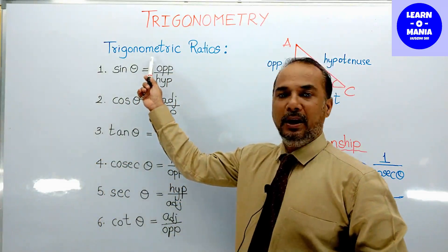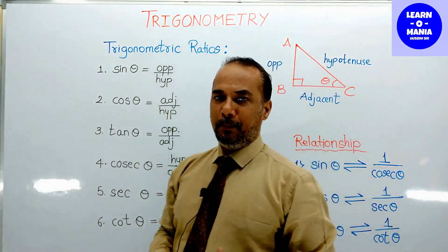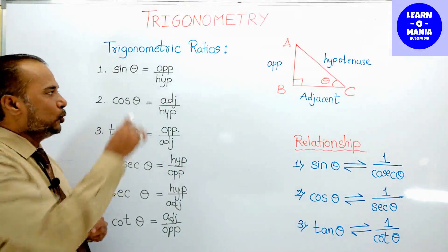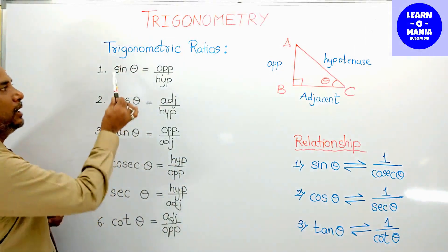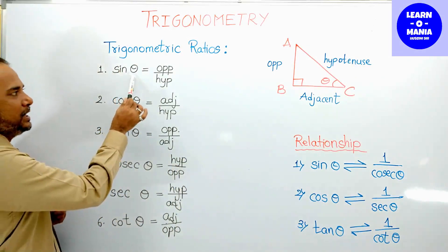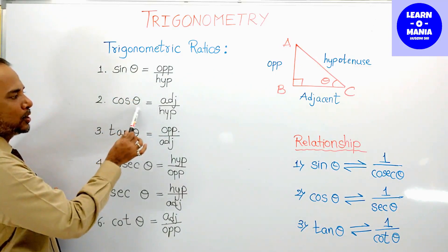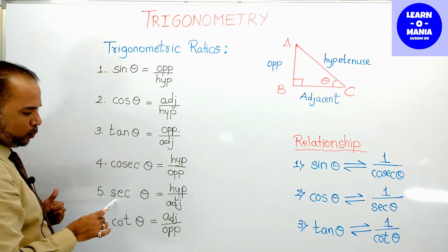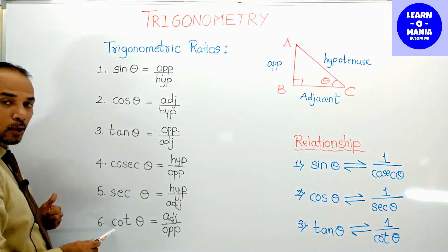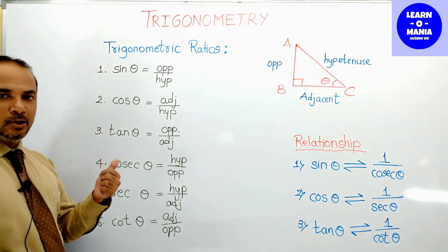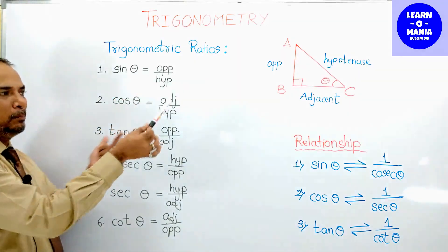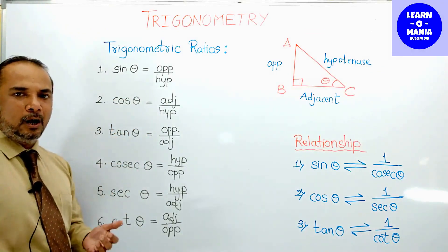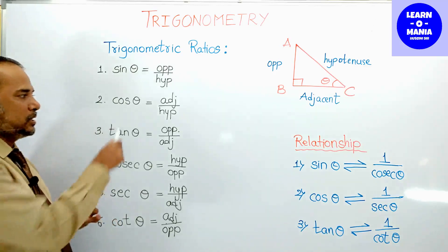Now we will start the first thing of this chapter: trigonometric ratios. This is the basic thing we need to understand first. There are 6 trigonometric ratios: sin theta, cos theta, tan theta, cosec theta, sec theta, and cot theta.